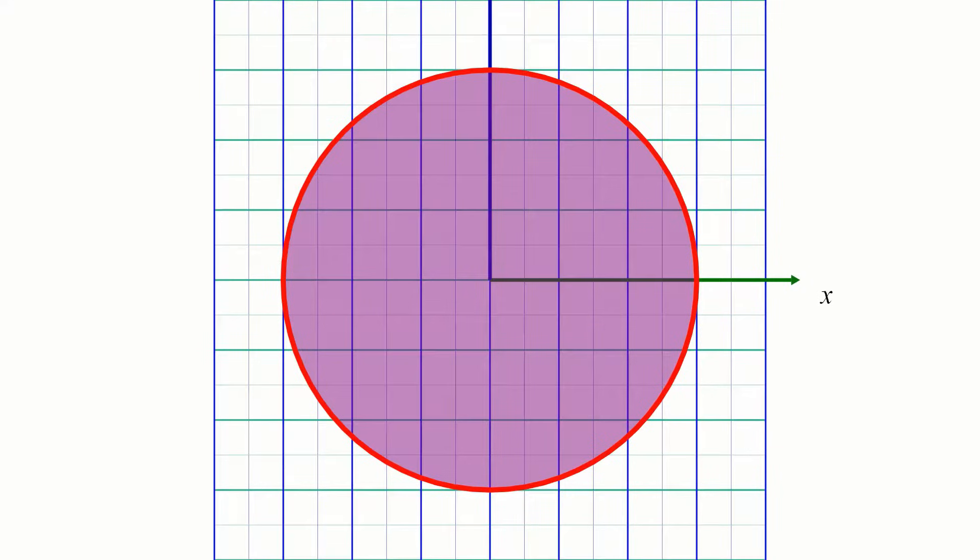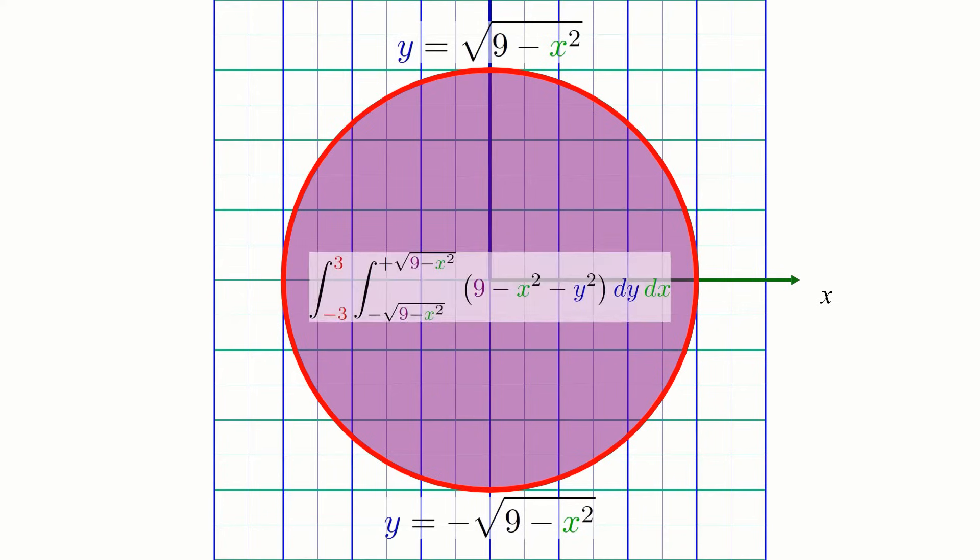Unfortunately, this is easier said than done. Since this region is not a rectangle, in order to integrate over it in x and y, we would need to describe the boundary curve as a relation between y and x. If we integrate with respect to y first, we would need to describe this circle using the two equations y equals square root of 9 minus x squared and y equals negative square root of 9 minus x squared, which would then become the bounds of our inner integral. This will work, but it's definitely going to be a pain to compute.